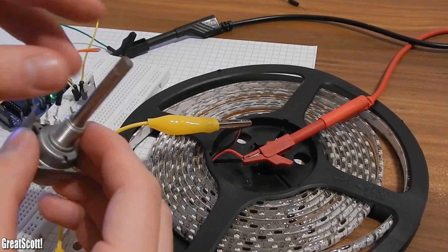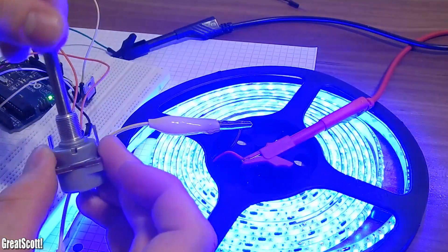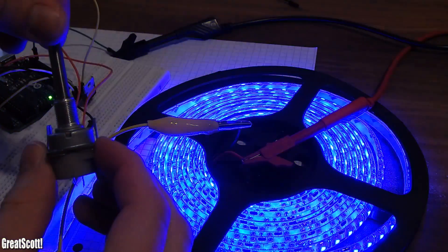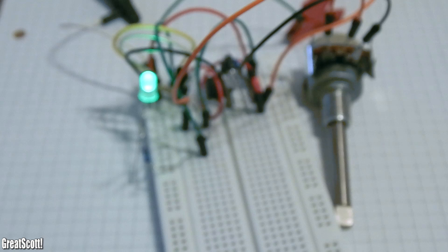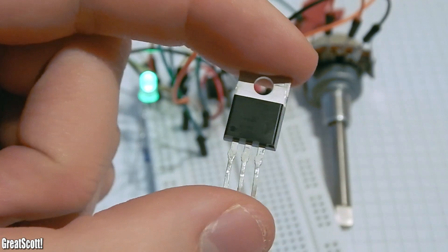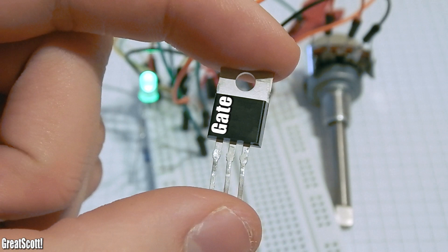I'm always using a MOSFET when I need more power or want to use a higher voltage, for example with this LED strip. The PWM signal goes to gate, negative side of my LED to drain, and ground to source.